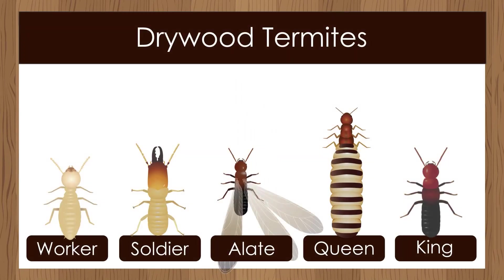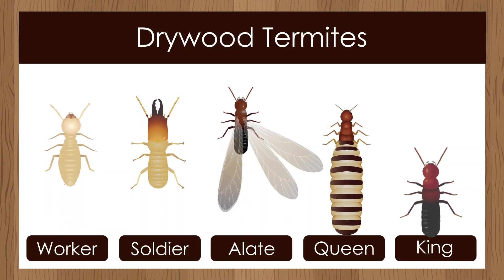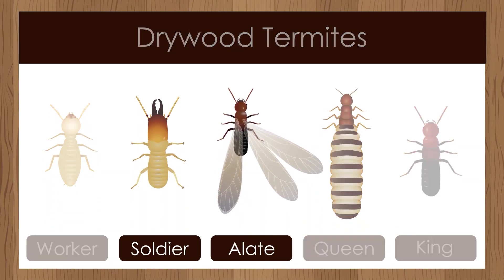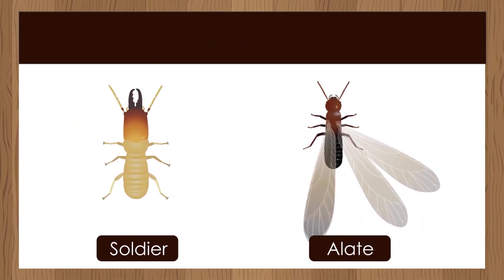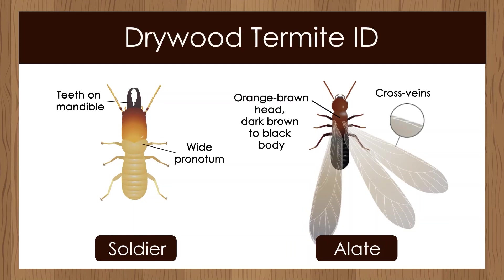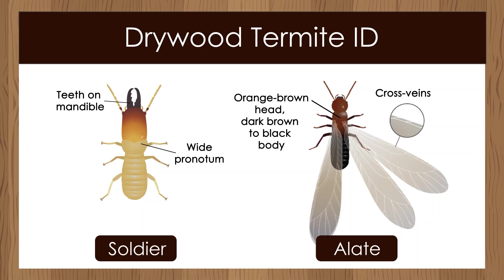The drywood termite caste consists of worker, soldier, alate, queen, and king. When identifying termite species, the soldiers and alates are the easiest to distinguish between. Drywood soldiers have teeth on their mandibles and have a wide pronotum. Drywood alates have an orange-brown head and dark brown to black body, and have cross veins on their wings.